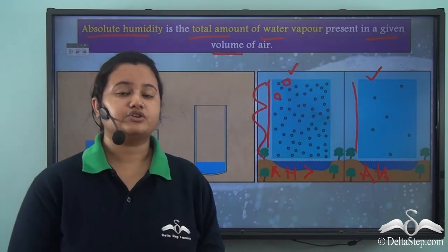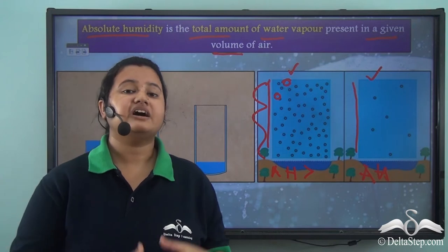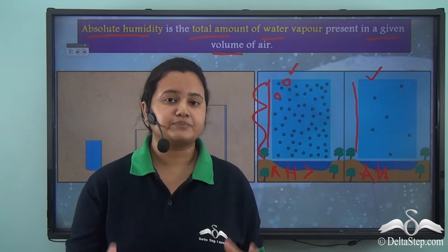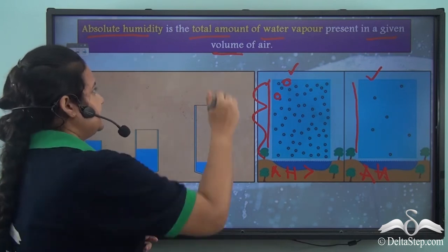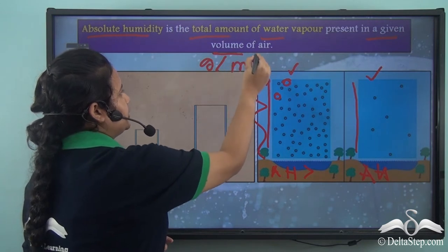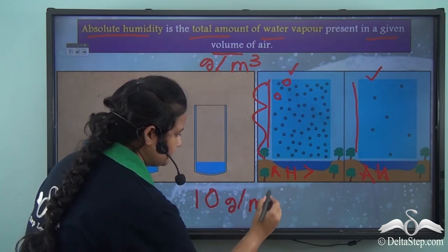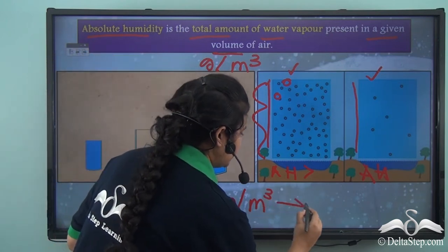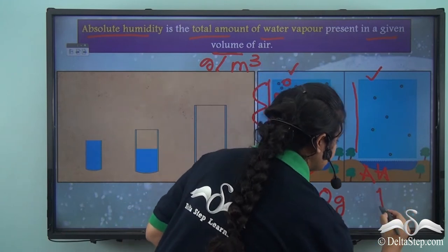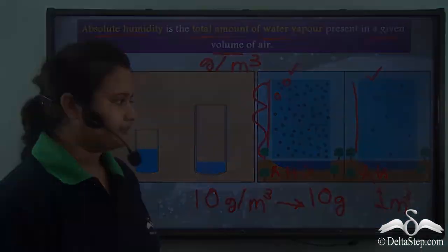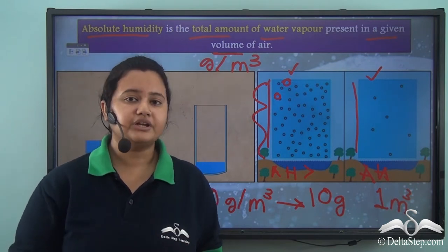Absolute humidity is independent of air temperature. This is because it measures water vapour in a fixed volume of air and therefore does not depend on temperature. Absolute humidity is expressed in grams per cubic meter. For example, if absolute humidity is 10 grams per cubic meter, it means that 10 grams of water vapour is present in 1 cubic meter of air.